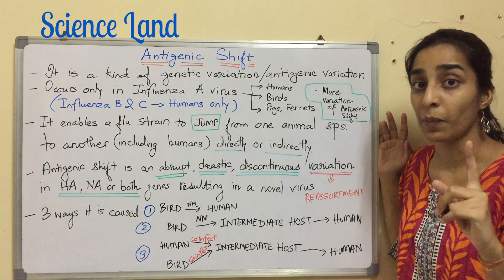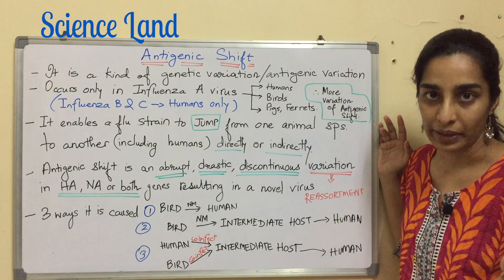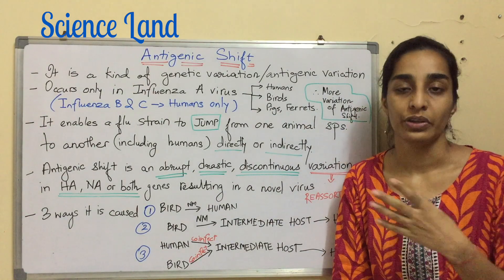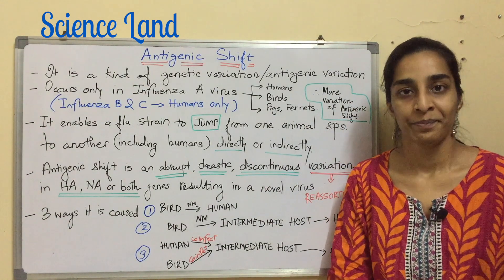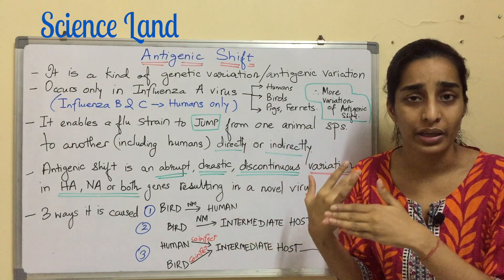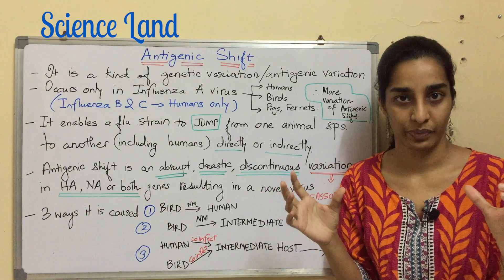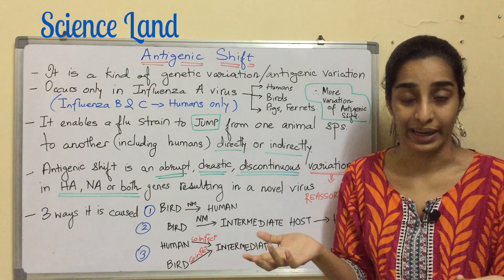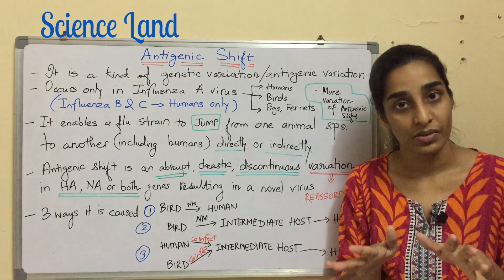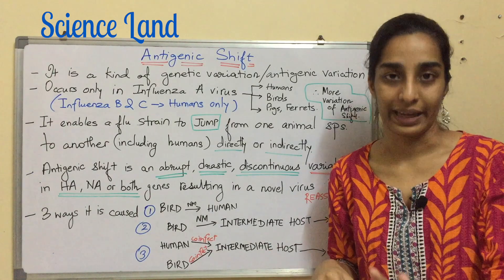You should always remember one key term: reassortment. Antigenic shift is a very specific case of reassortment of genes. The genes in bird influenza A virus and human influenza A virus essentially have the same functions, so a mix-and-match of those genes takes place — that is known as reassortment. I'll be explaining this with a diagram.